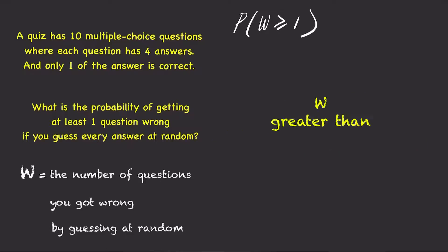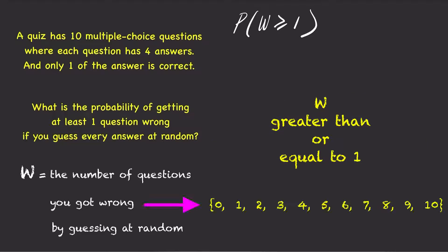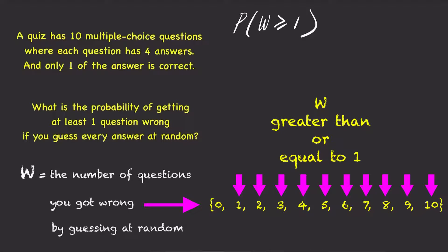w greater than or equal to 1 means w could be equal to 1, 2, 3, 4, and all the way up to w equals 10. That's a very large number of cases to consider. Using the complement rule here would be much easier and much quicker.